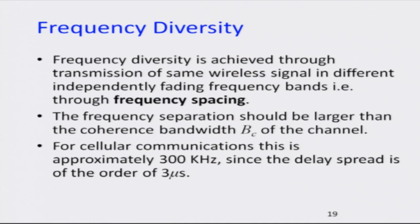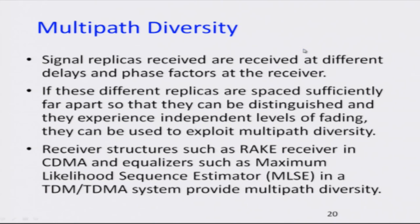Frequency diversity is where you receive signals in multiple frequency bands — such as OFDM, which enables transmission through multiple frequency bands — and combine these signals to enhance signal strength. Multipath diversity can be seen in CDMA, where different signal copies come from different paths. Because of the nature of the spreading codes used in CDMA, you can pick these different signal components and combine them constructively rather than letting them interfere, through a mechanism known as a rake receiver, which significantly enhances the quality of the signal.